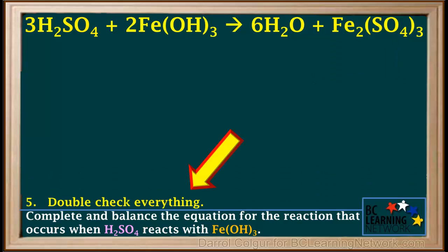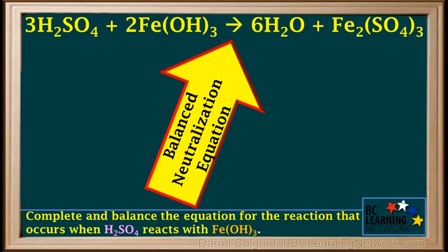At this point, it would be good to check the equation and make sure all atoms and all charges are balanced. So now we have completed the balanced neutralization equation for the reaction that occurs when the acid, H₂SO₄, reacts with the base, Fe(OH)₃.